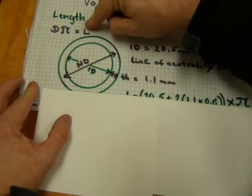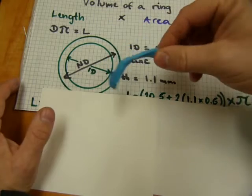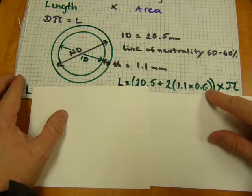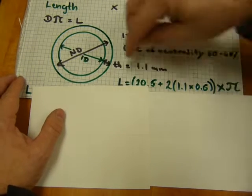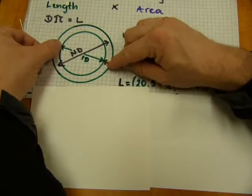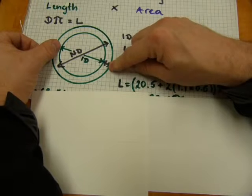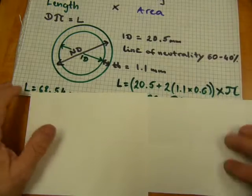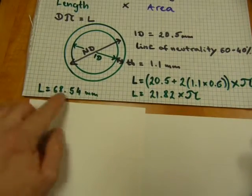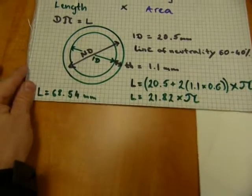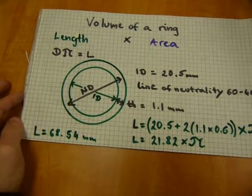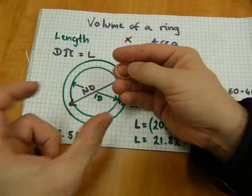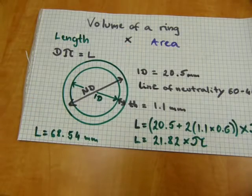So diameter times pi is the length or the circumference of a ring. There is the diameter, there is my thickness. I work with the concept that's 60% away from the inside diameter and on both ends, so the inside diameter had to be increased by 60% of the thickness here and 60% of the thickness here. That's what you see here times pi. There is everything and that's the length of the ring, 68.54mm. So I hope that seems reasonable for a starter that this ring is about 6cm long when it starts. So that's the easy part.